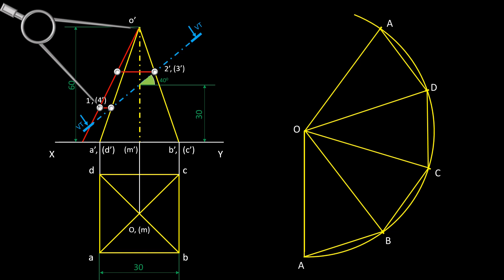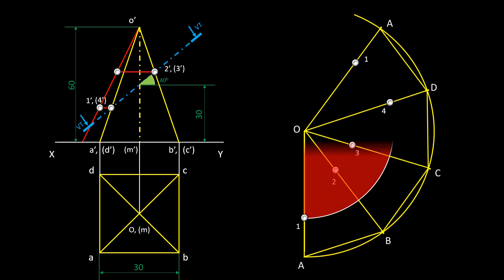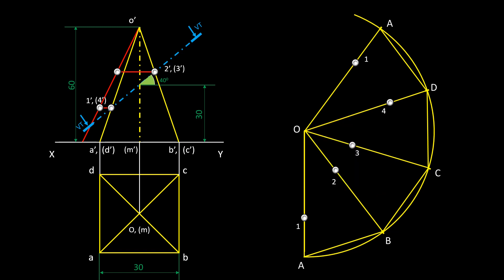To plot the point 1, measure the distance from O to 1 from true length line and mark it on the edge OA in the pattern. Similarly point 2 from the true line and mark it on edge OB, point 3, point 4, and finally point 1. In other way, points 2 and 3 are of same length, so we can draw an arc from 2 to plot the point 3. Similarly in the case of point 1 and 4 also. And finally complete the remaining portion in the pattern with thick lines.